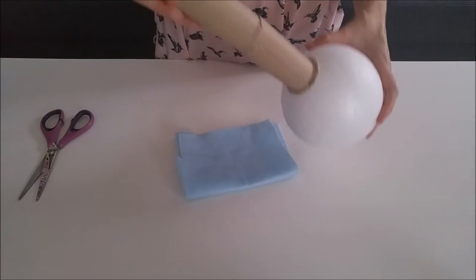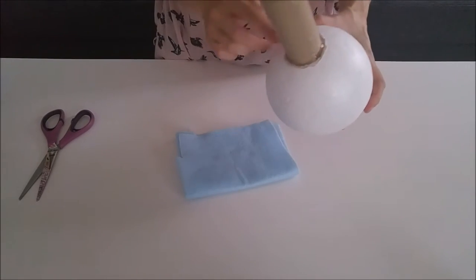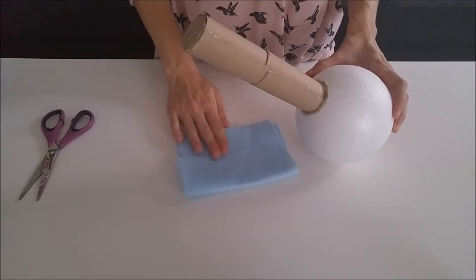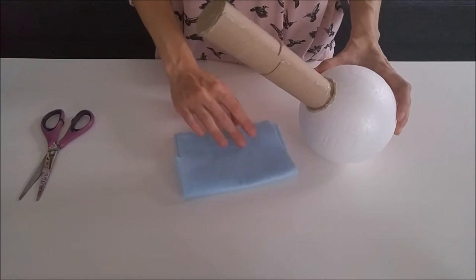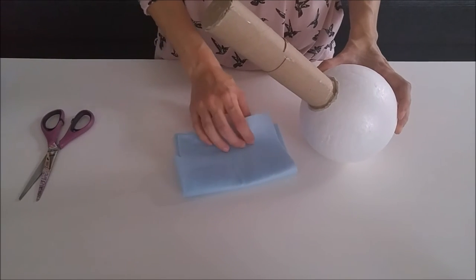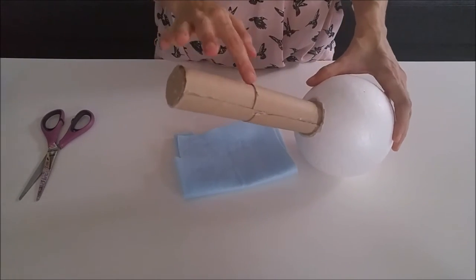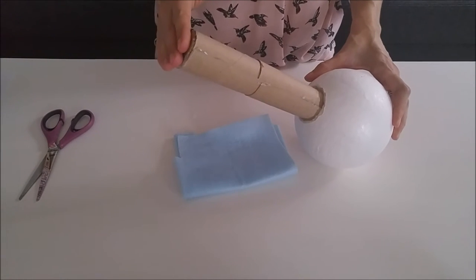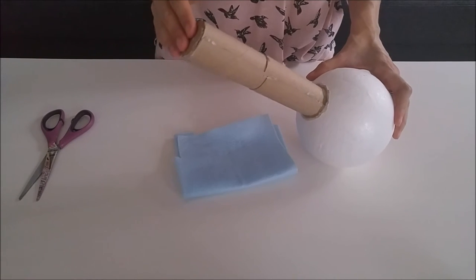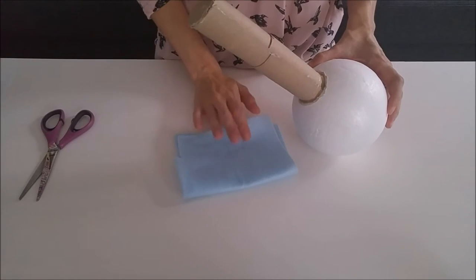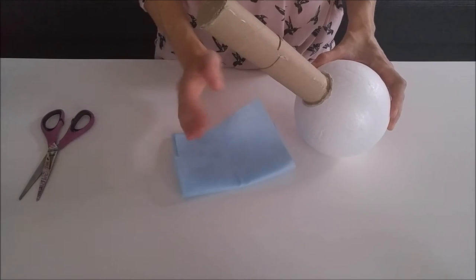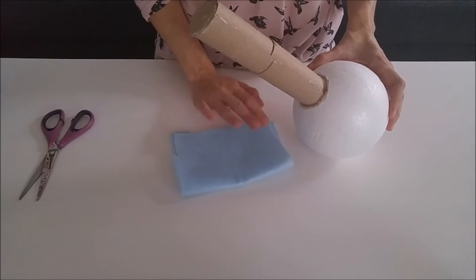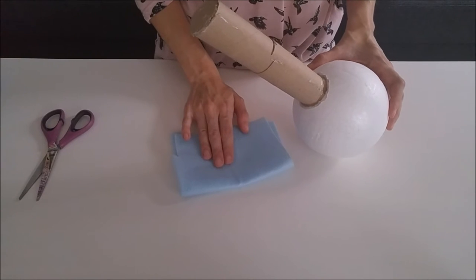So once that glue is nice and cooled down and hardened, the next step is that we're going to be wrapping our bouquet handle using felt. The reason why we use felt is because it is a thicker material, so it does help to smooth over any of our seams to really create a nice smooth finish on our handle. There's going to be a couple more layers on top, so it doesn't matter too much the color of your felt. I picked blue just because that's what I had in my stash, but you can definitely pick white or cream, whatever goes with your bouquet colors.